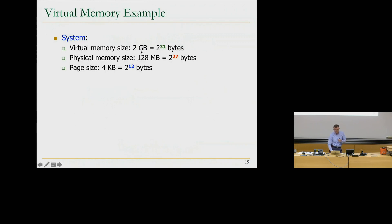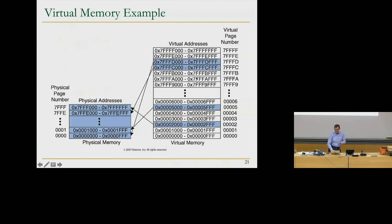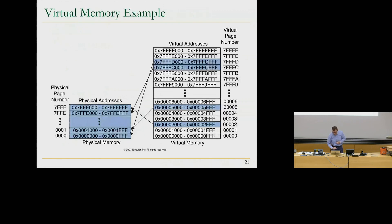Let's take an example. Assume virtual memory size is 2 to the 31 bytes and physical memory size is 2 to the 27 bytes, with page size 2 to the 12 bytes. The page offset is 12 bits. Number of virtual pages: 2 to the 31 divided by 2 to the 12 equals 2 to the 19, so the virtual page number is 19 bits. Physical pages: 2 to the 27 divided by 2 to the 12 gives a physical page number of 15 bits. That's the mapping from virtual to physical memory. We'll continue from this point next time.